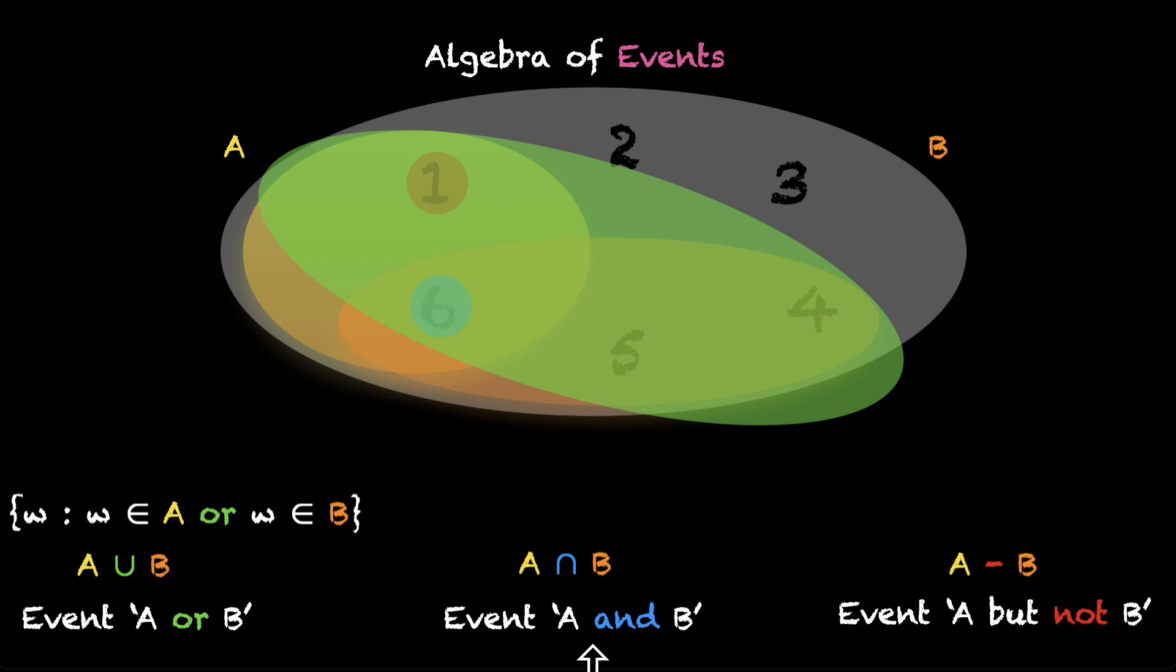Let's look at the next one, A and B. Well, this says all the outcomes W where W belongs to A and W belongs to B. So, this has to satisfy both of these conditions together.